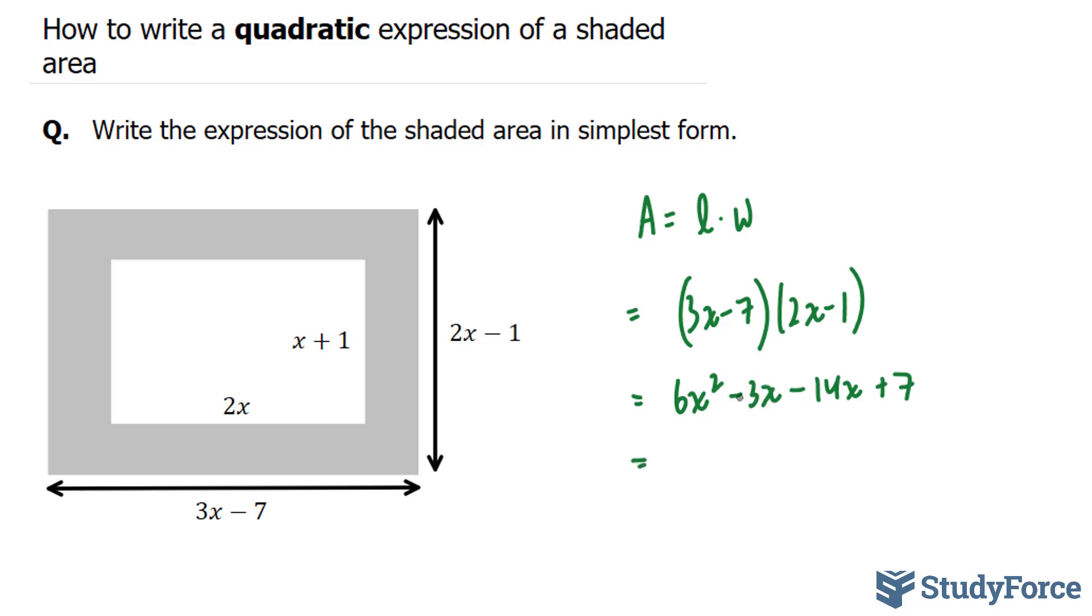Adding up the middle terms, given that they're like terms, gives us 6x squared minus 17x plus 7. So that expression right there represents the area of the whole rectangle.